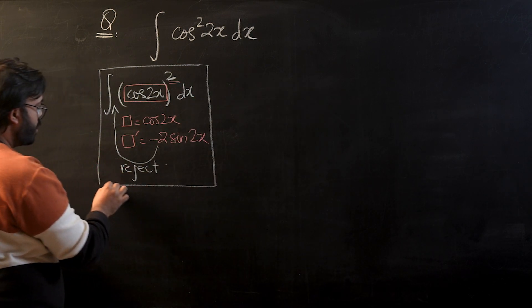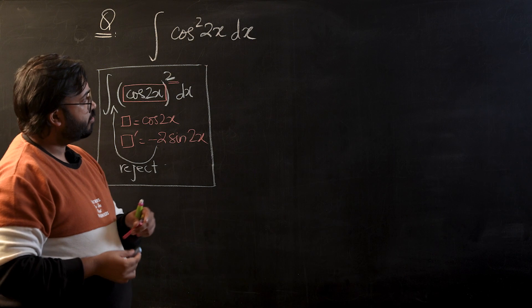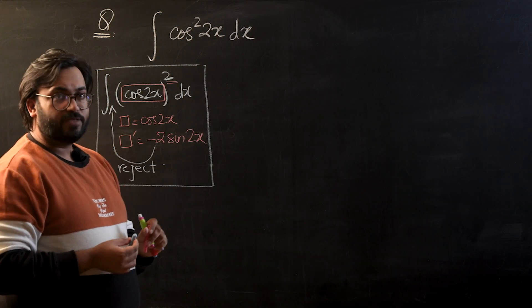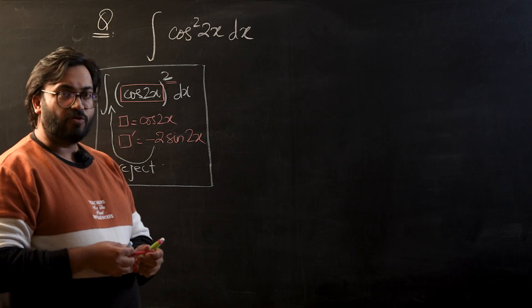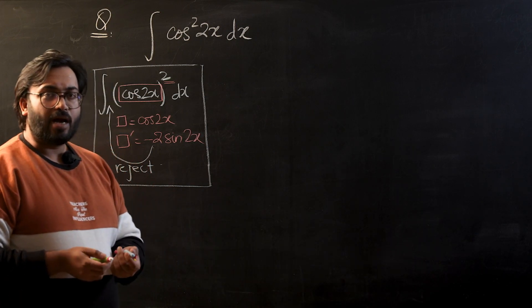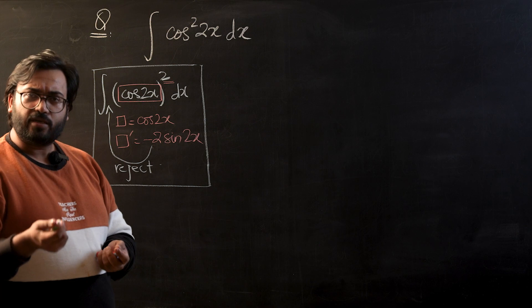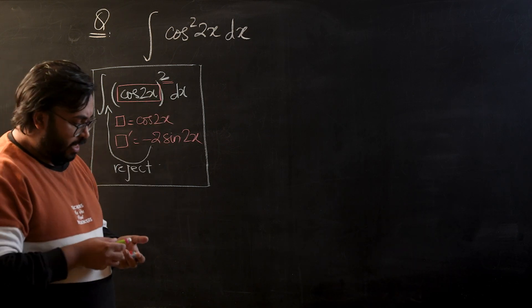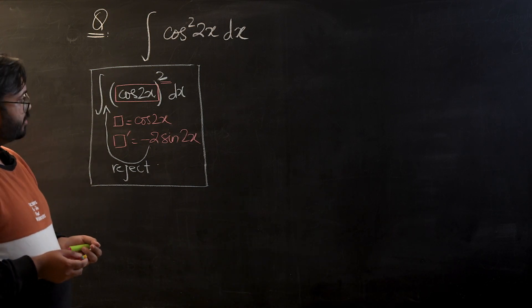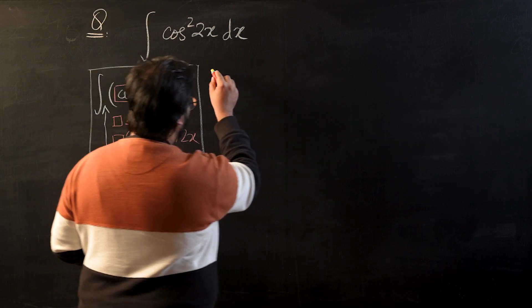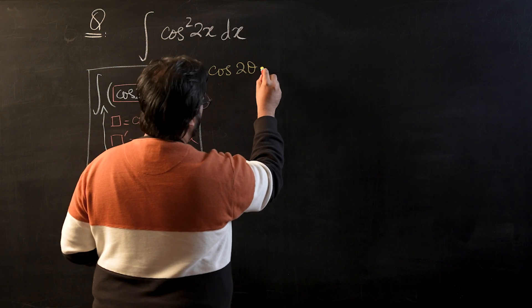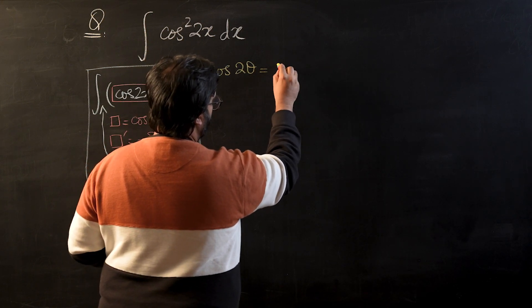So this is the first approach that any student would take whenever we are facing cos²(2x). Now I would not call the idea that solves this question very intuitive because it's more of a learned way, it's more of a memory-based thing. So if you're looking at it for the first time, I would highly recommend that you try to remember what we are going to use. The idea that we are going to use is a double angle identity for cos. We have seen that cos(2θ) can be written as 2cos²(θ) - 1.